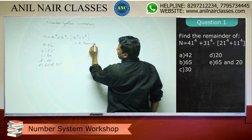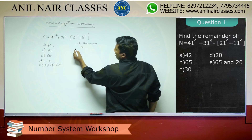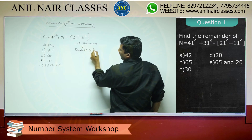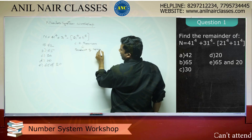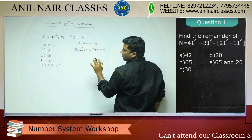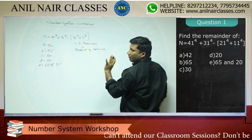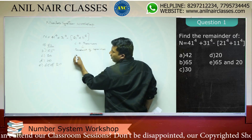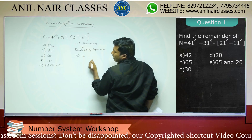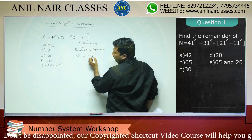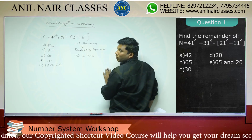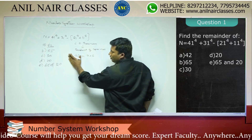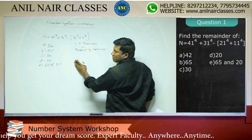The Chinese Remainder Theorem states: write the number as a product of co-primes. When the numerator is divided by the denominator, express the denominator as a product of co-primes. For example, 42 can be written as 7×6 or 3×14. Instead of taking 42, I will apply a little smartness.